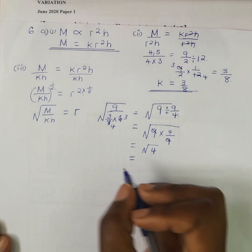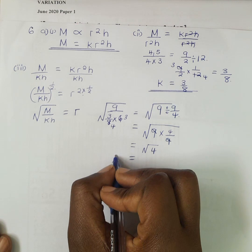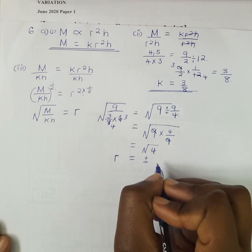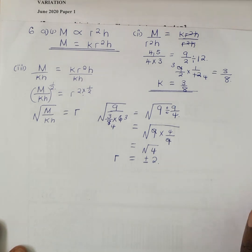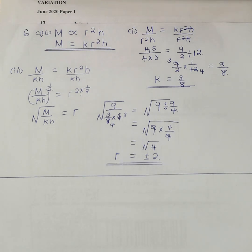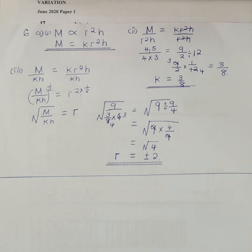So R equals plus or minus 2. That is our final answer on part 3 of June 2004, Maths Paper 2. This was the complete solution of number 6 of June 2004, Maths Paper 2.